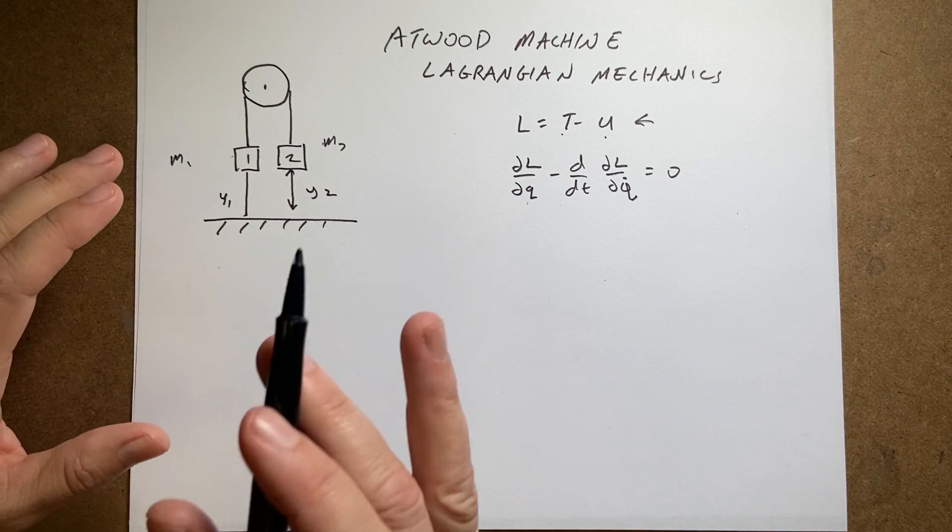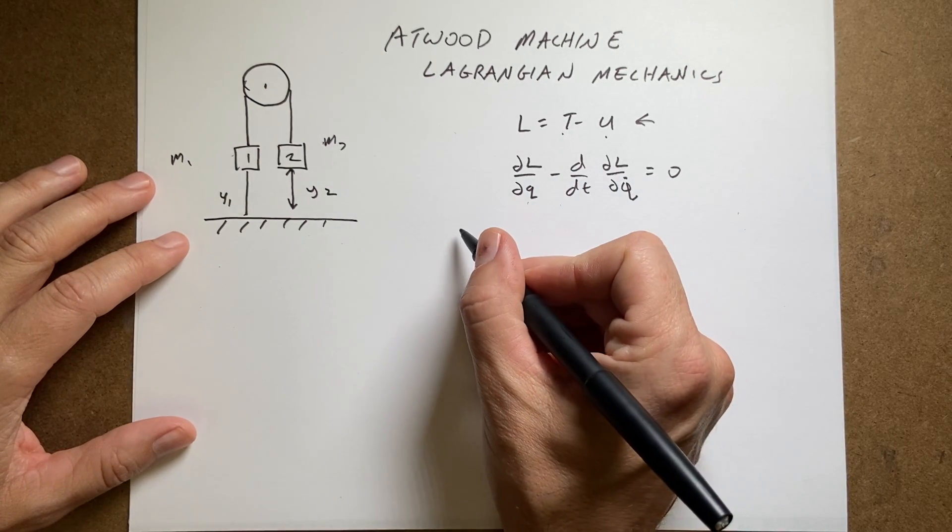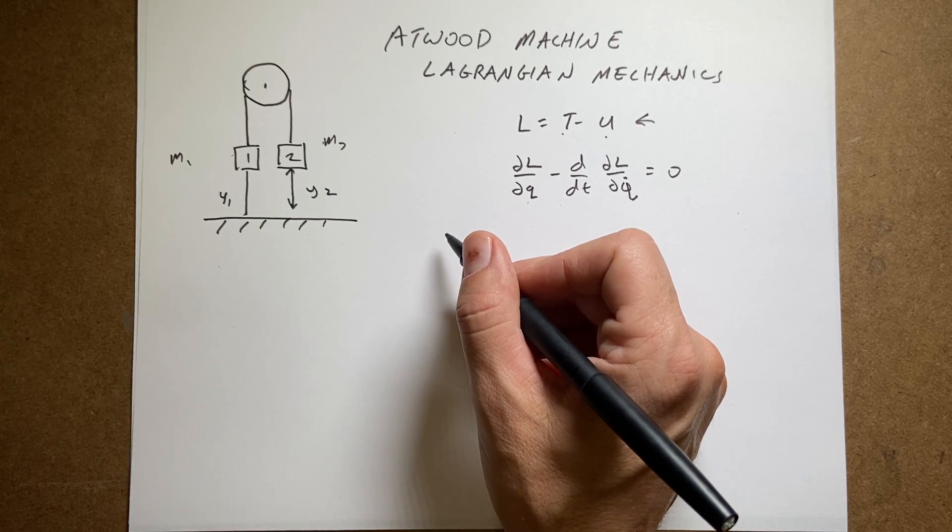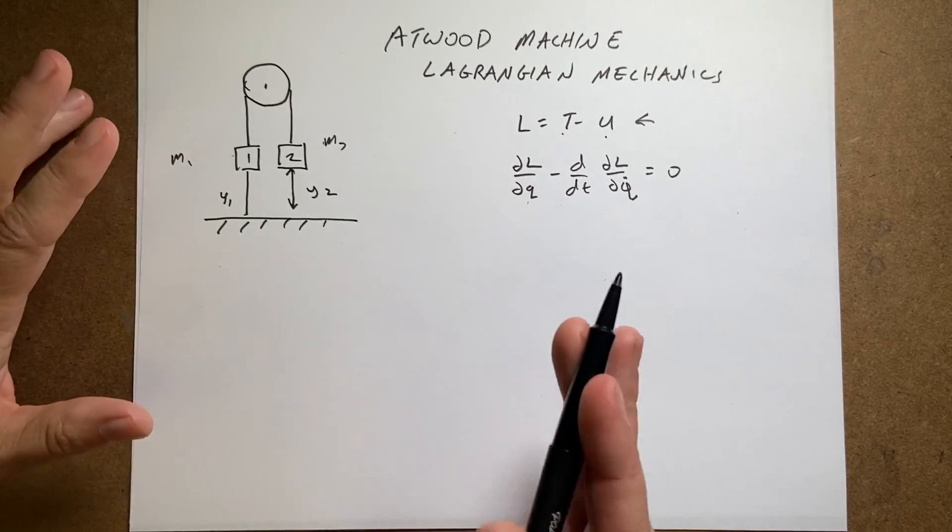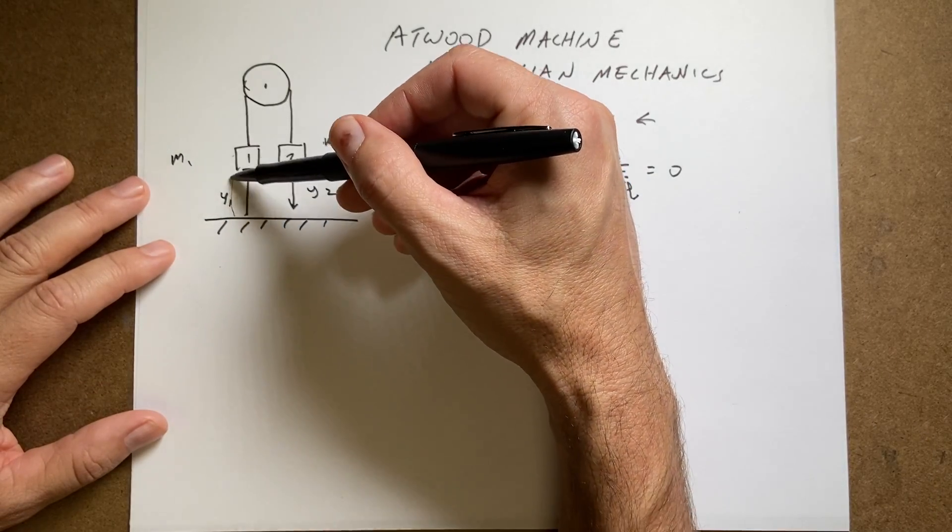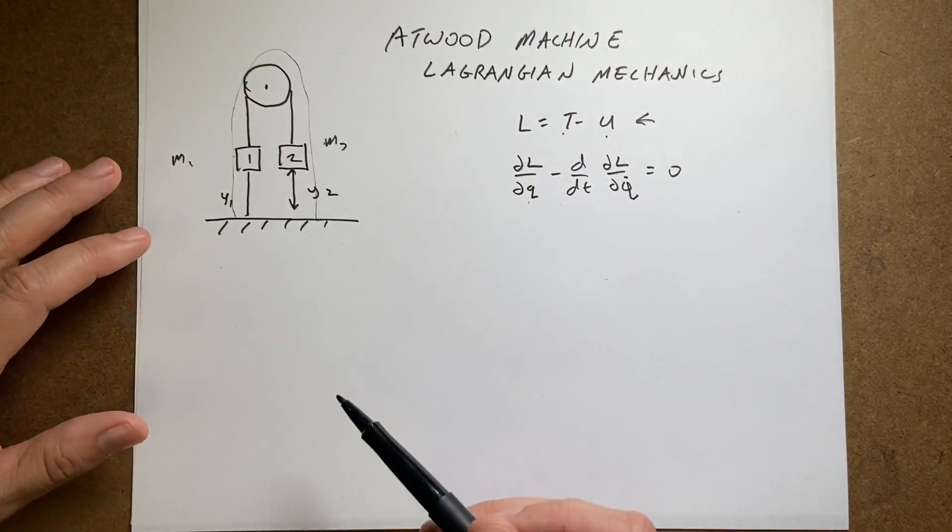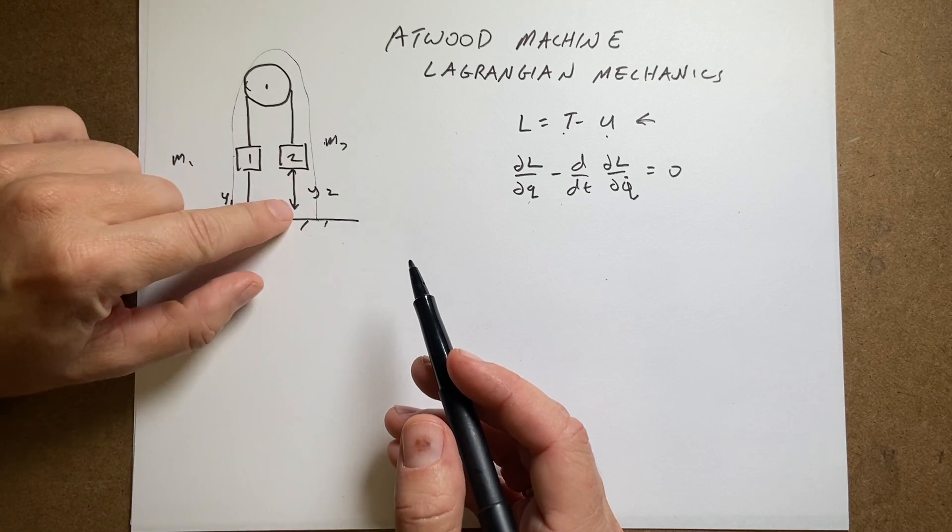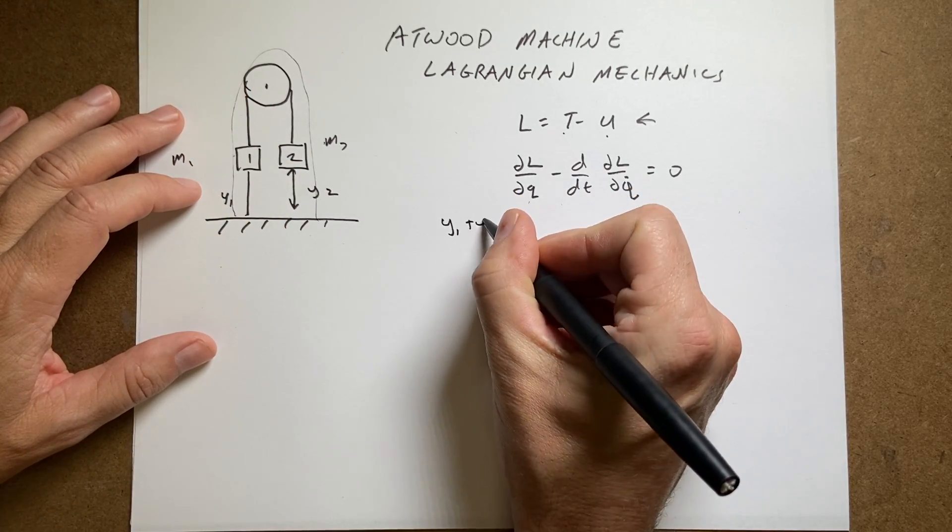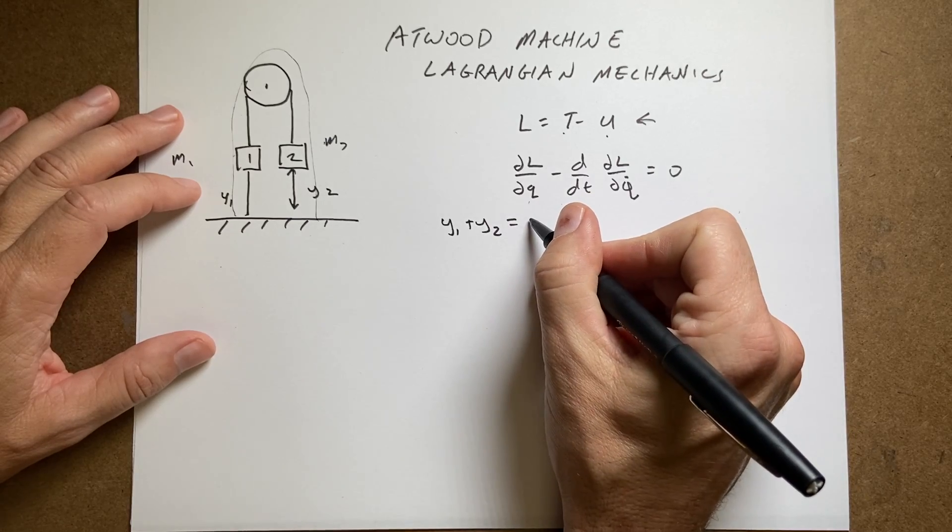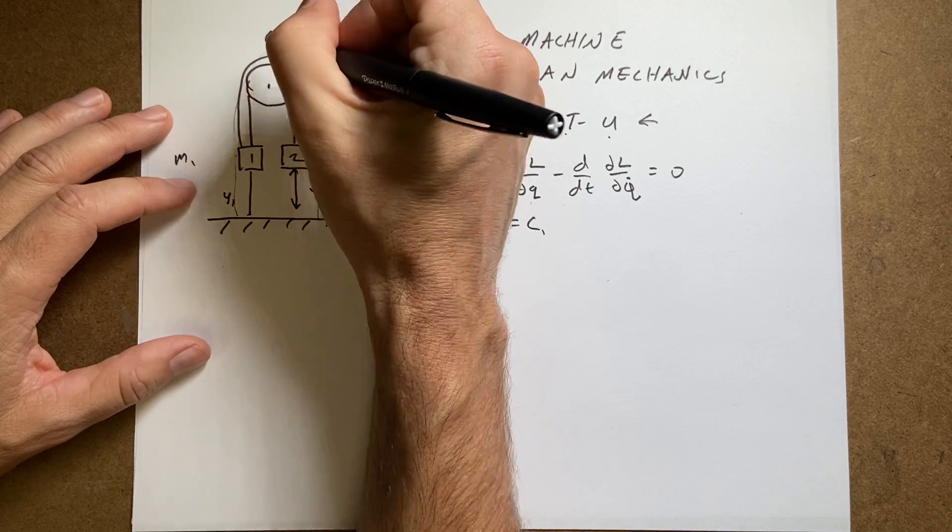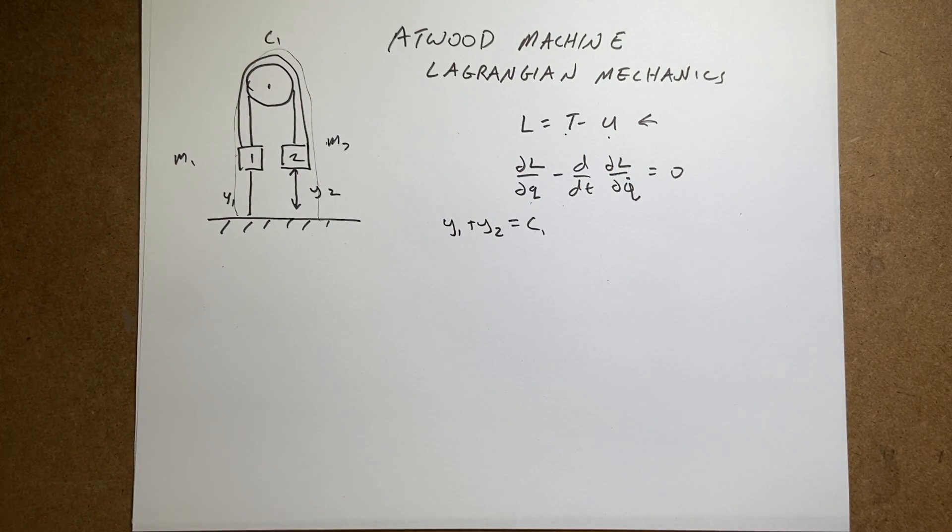Okay, so if I want to write down the kinetic energy, let me go ahead and write the equation of constraint, because there is an equation that y1 and y2 can't be whatever they want. If you think of this distance all the way, it has to be constant, right? Because as this one moves up, that one moves down, but the total distance has to be the same. So what if I said y1 plus y2 equals some constant c1. So this distance is c1. And that's true.